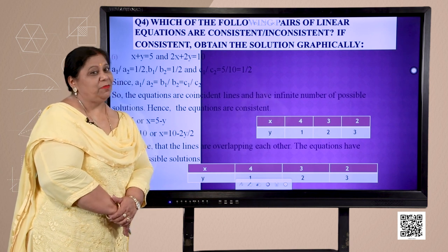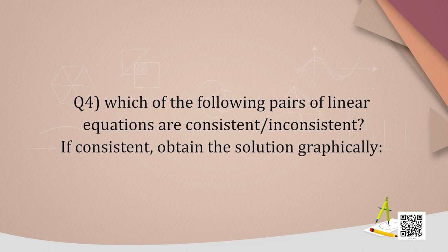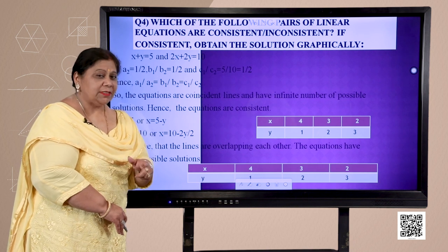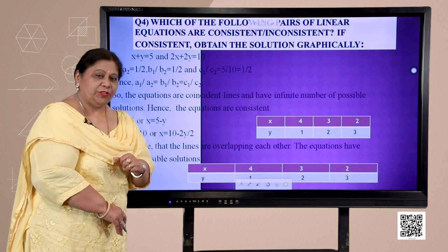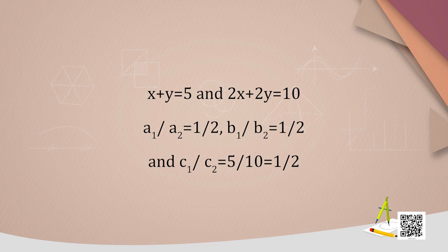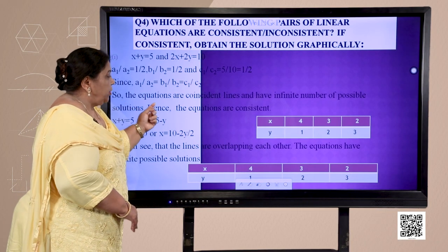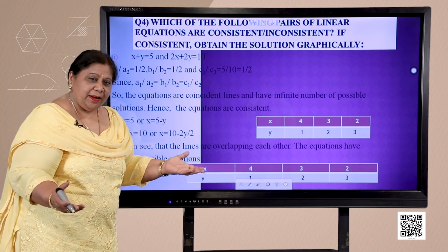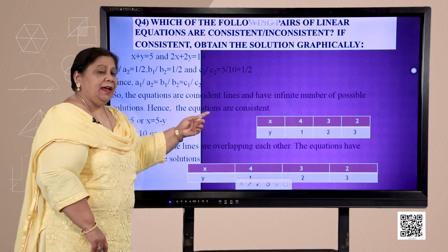Let us look into question number 4, which says: which of the following pairs of linear equations are consistent or inconsistent? If consistent, obtain the solution graphically — that means we need to draw the graphs of only those linear equations which have a solution. Let us see the first part: x + y = 5 and 2x + 2y = 10. We have a1/a2 = 1/2, b1/b2 = 1/2, and c1/c2 = 5/10. The equations are coincident lines with infinite solutions. Hence the equations are consistent.